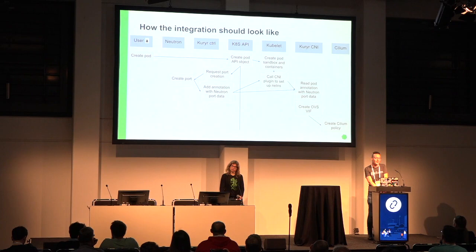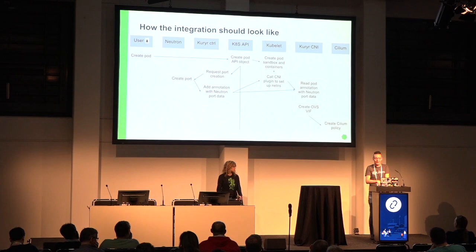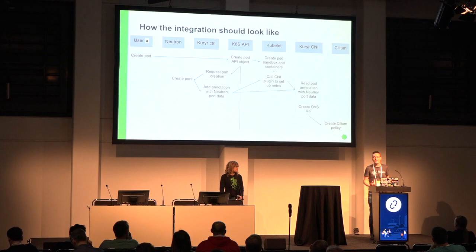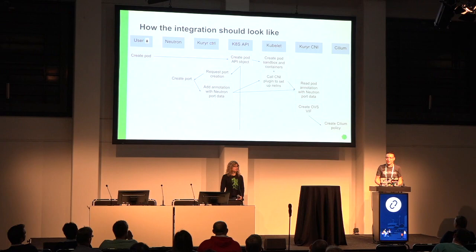The clean integration should look like this: the mechanics of creating pods and how the Kuryr controller talks with Neutron stays the same. But then Kuryr CNI would take care of creating VIFs and reading Neutron data. Cilium on top of that, getting the IP address assigned by Kuryr CNI, would be able to create BPF programs for filtering packets and observe the Kubernetes API for network policies.